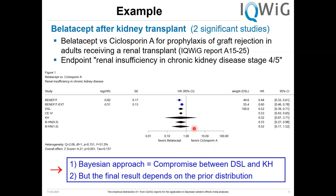But the problem is that the final result depends on the prior distribution. If we use the half-normal with a scale parameter of 0.5, we get a significant result. If we use a different one with scale parameter 1, we get a non-significant result. These discussions about which prior to use should be made in advance and not after you have the results.